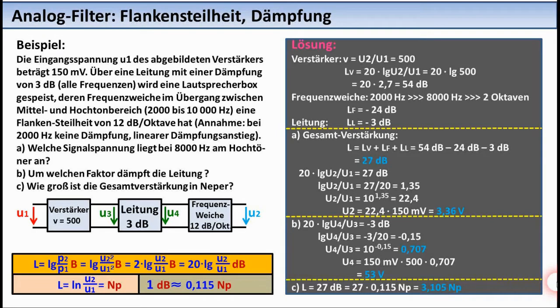In this task example, an amplifier drives a loudspeaker via a line and a crossover. In order for a clear calculation to be possible at all, these two simplified assumptions are made, namely first, that at 2000 Hz there is no attenuation at all, and that the attenuation increase from this frequency is linear. Both are of course not possible in reality.